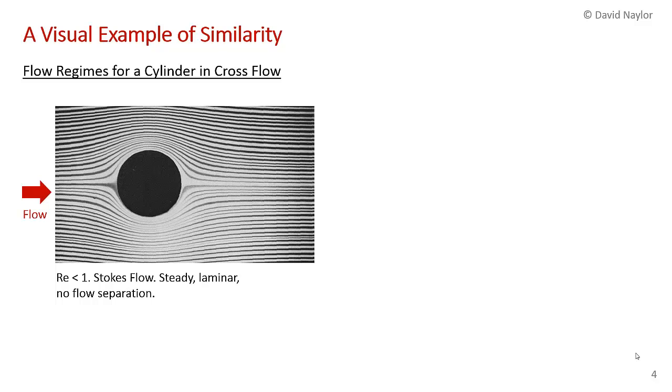Let me start by talking about something you already know a little bit about: flow regimes. I'm going to talk about flow regimes over a cylinder. You've seen in lab number one laminar flow over a sphere, which is very similar. At a Reynolds number less than one for a cylinder, you get Stokes flow—very steady laminar flow with no flow separation.